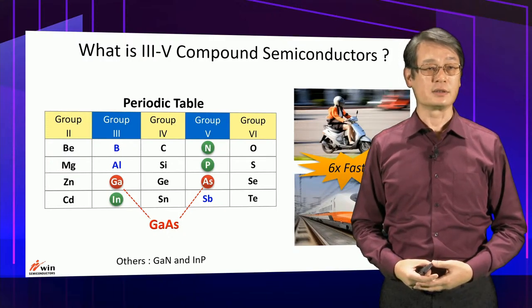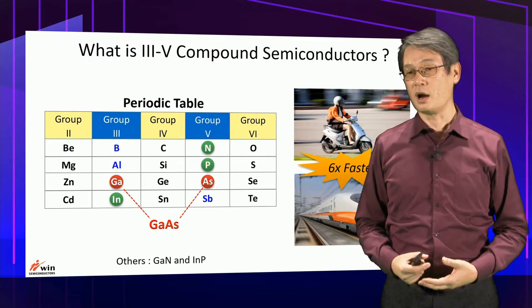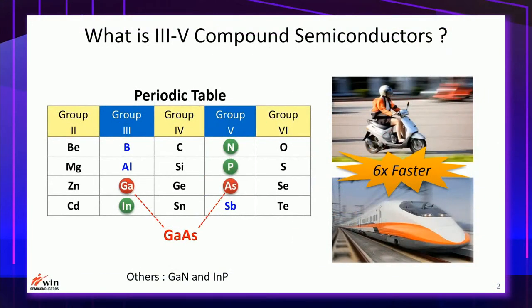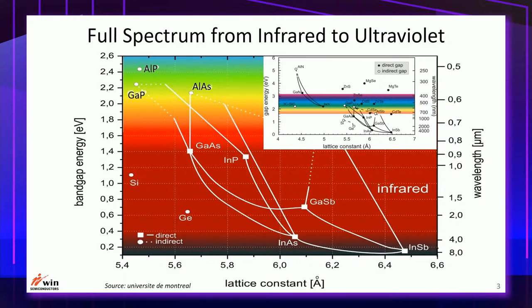For integrated circuit applications, compound semiconductors have the advantage of high speed. They can run theoretically five to six times faster than their silicon counterparts. The second advantage is that for most compound semiconductors, they are able to emit light, which silicon cannot. They also absorb light more efficiently than silicon.